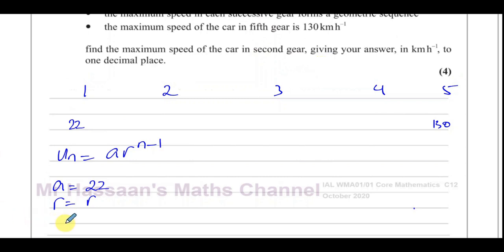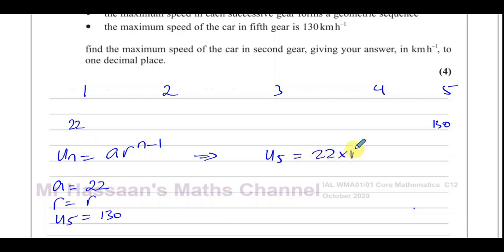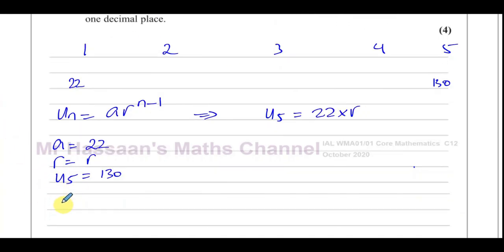We know that the fifth term is 130. So we can set that up: the fifth term is given by A which is 22, times R to the power of 5 minus 1, which is 4. So we have 22 times R to the power of 4 equals 130.